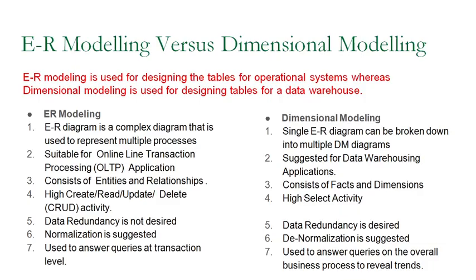Now we will start with dimensional modeling. Dimensional modeling is used to design the data warehouse. For database design, we use the ER model — the Entity Relationship model. ER modeling is used for designing the tables for the operational system, which is the Online Transaction Processing system. Dimensional modeling, on the other hand, is used for designing the tables for the data warehouse. Now we will look at the difference between ER modeling and dimensional modeling.